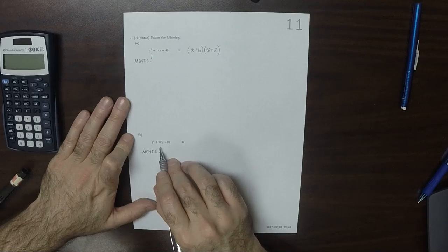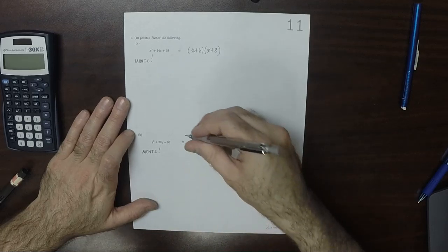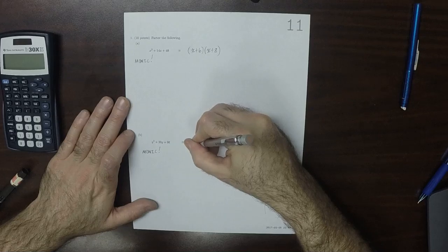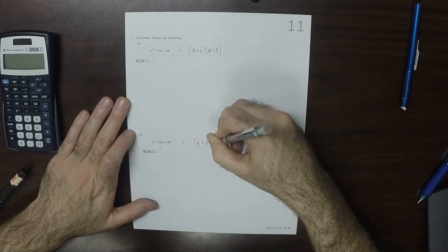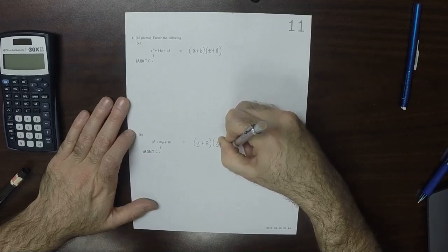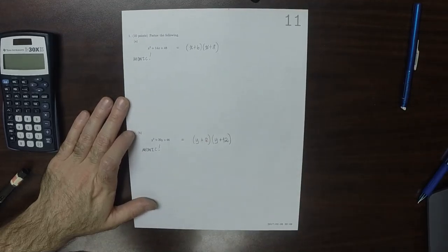12 and 8. Yep. So then, that would be y plus 8 multiplied by y plus 12. Terrific. And that's the answer.